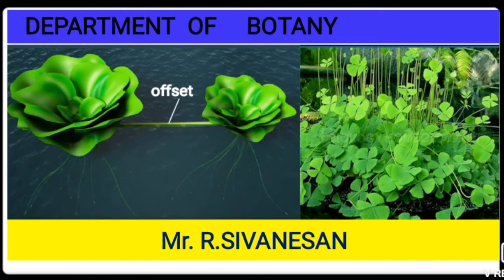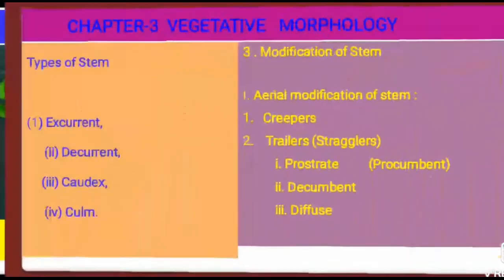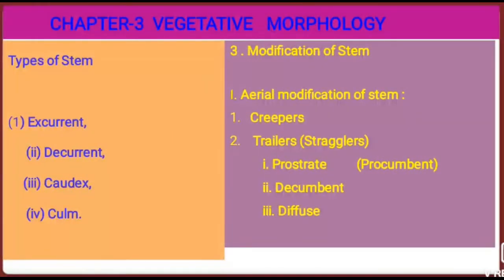Hello students, I am Sivanathan from the Department of Botany. Welcome to today's class. In the previous class, we learned about Chapter 3: Vegetative Morphology. One of the main topics was types of stem, which include four subtitles: excurrent, decurrent, caudex, and curl.